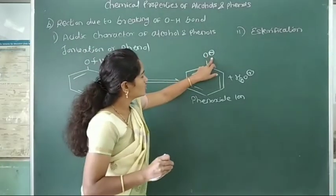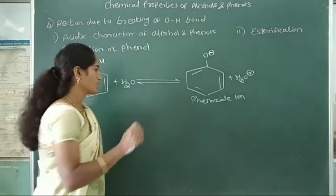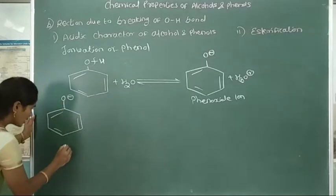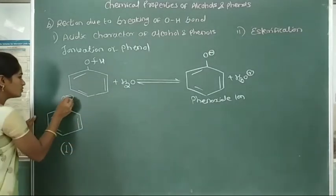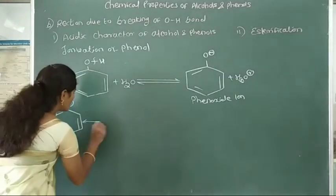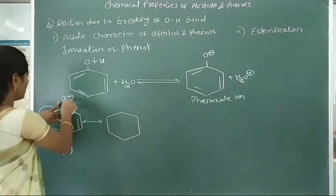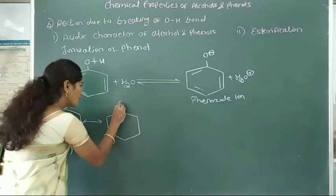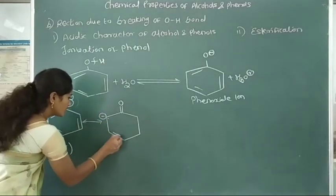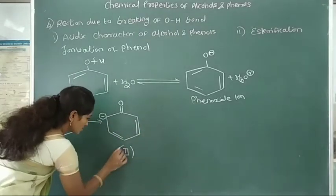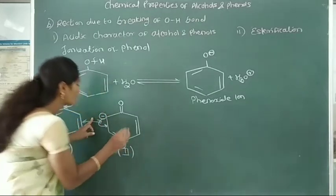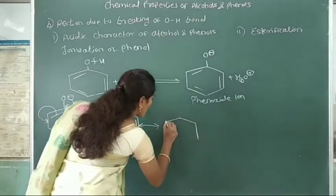The negative charge in the phenoxide ion is delocalized through the benzene ring. In the first resonating structure, the negative charge is on oxygen. This negative charge shifts into the carbon-oxygen bond, forming a carbon-oxygen double bond. The double bond then shifts to the next carbon-carbon single bond. In the second resonating structure, the negative charge is localized at the ortho position.